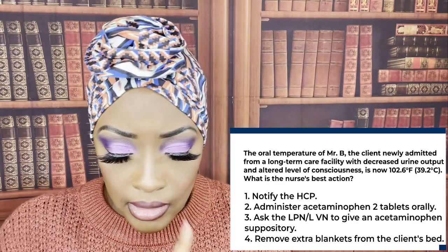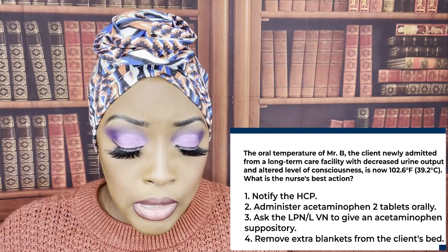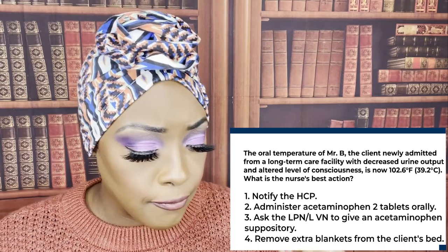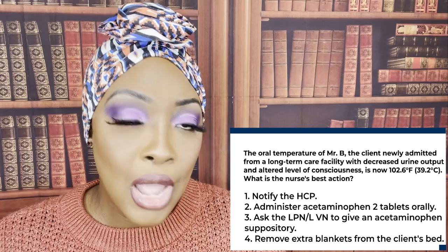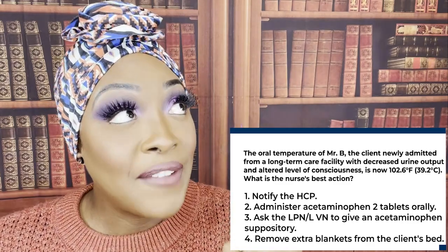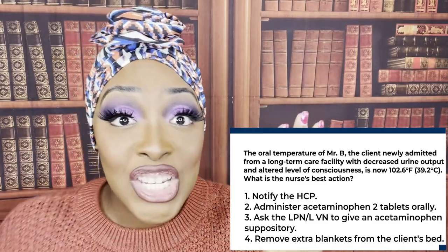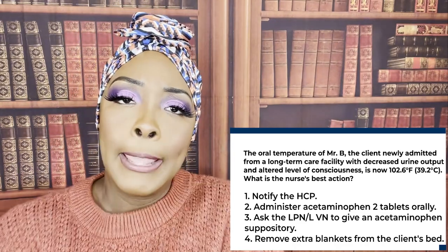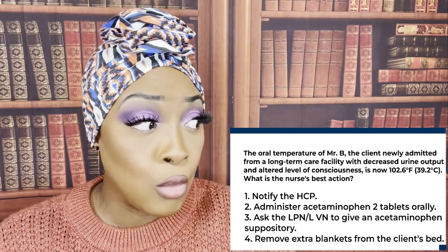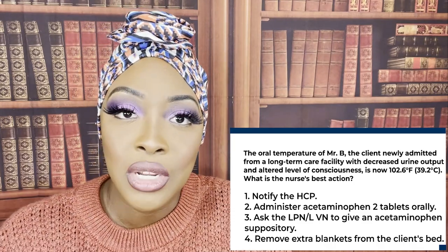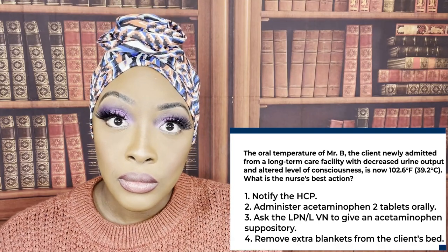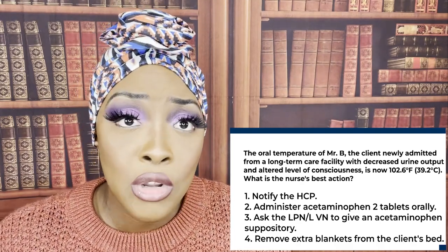Mr. B's temperature was originally 99.5 and is now 102.6. The fact that this is an older patient from a long-term care facility, with a temperature, change in level of consciousness, and decreased urine output — we're suspecting a UTI or infection. What is a first-sided symptom of infection in an older adult? Confusion. You've done the assessment, you know something's wrong — call the healthcare provider and get orders.